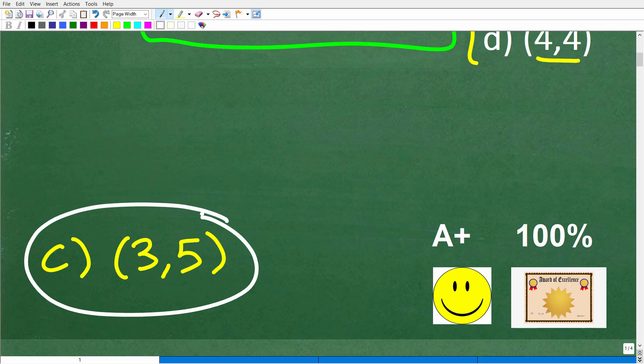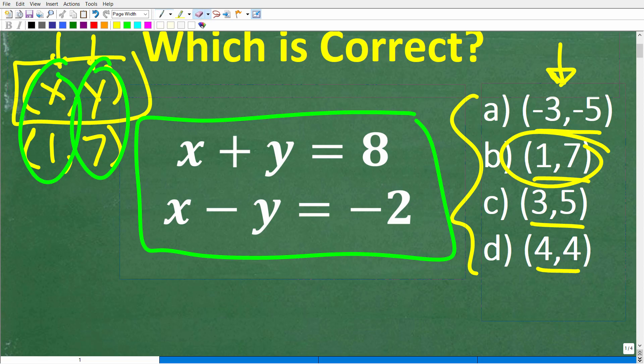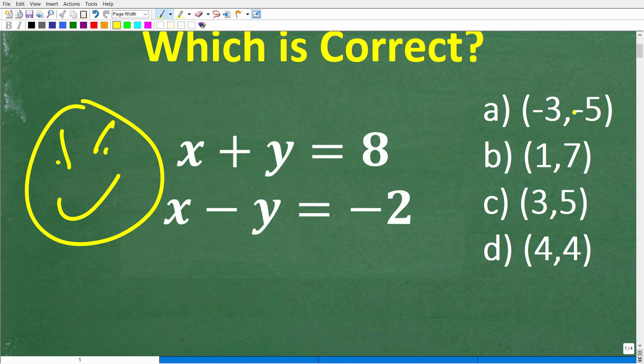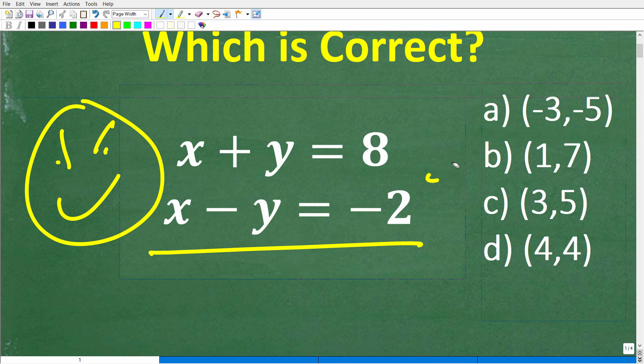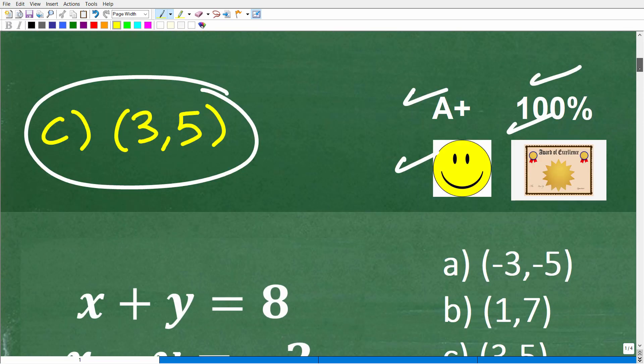Now, if you got this right, you definitely get a happy face and a Certificate of Excellence for solving two variable linear systems, or maybe just being astute at taking multiple-choice exams. You might have gotten this right without even knowing how to do the problem, just by using these answers and plugging in the values. That's exactly what you should have done. When you're dealing with a multiple-choice math question, nine times out of ten, you can use the answers to figure out the actual solution, even if you don't know how to do the problem.